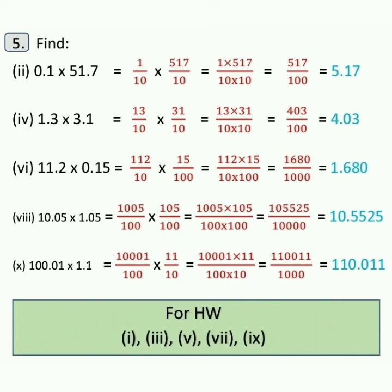Now sum number 10: 100.01 into 1.1 is equal to 10001 upon 100 into 11 upon 10, is equal to 10001 into 11 upon 1000, which is 110011 upon 1000, is equal to 110.011. Is it clear, everyone? Very good.